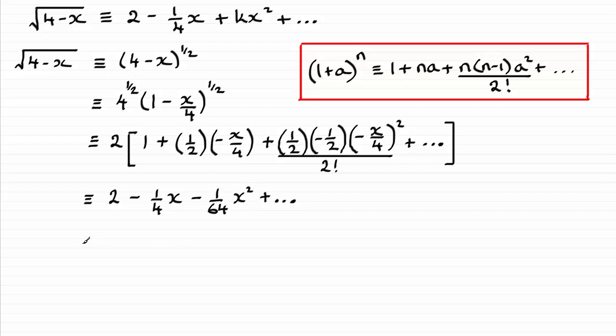And I'm just going to finish this off by saying that this is identical then to 2 minus a quarter x plus k times x squared and so on, where k is that rational constant, and that rational constant is minus 1 over 64. Okay, so I hope you're able to follow that.